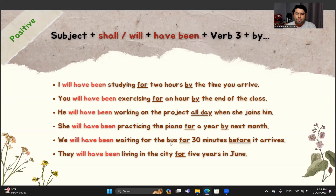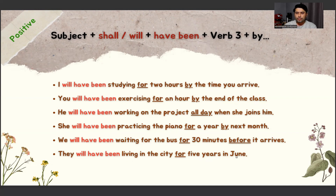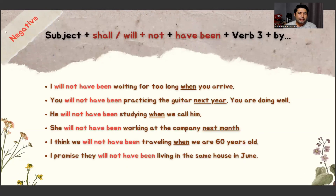We will have been waiting for 30 minutes before it arrives. They will have been living in the city for five years by July 1st. Negative sentence structure: subject + shall/will + not + have been + verb 3 + time expressions.